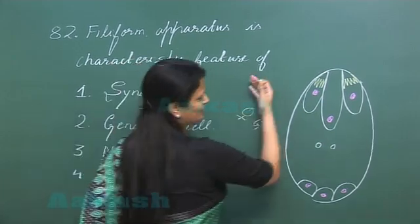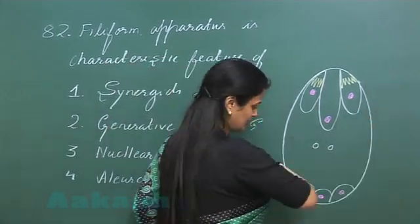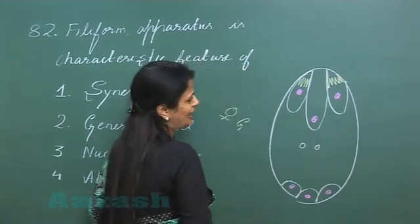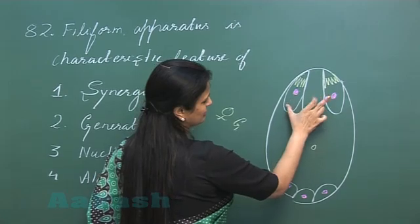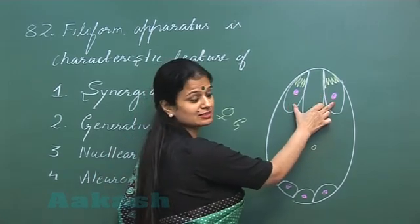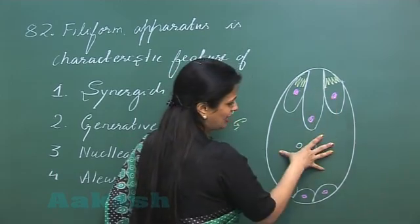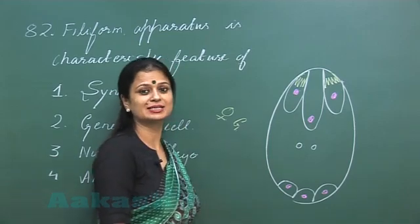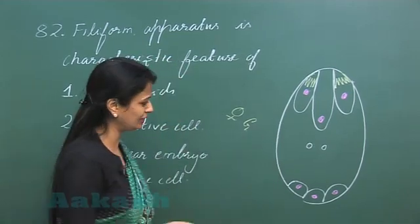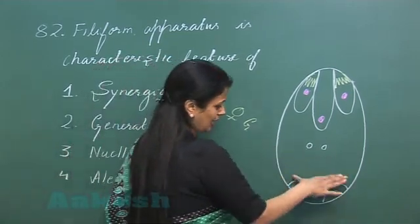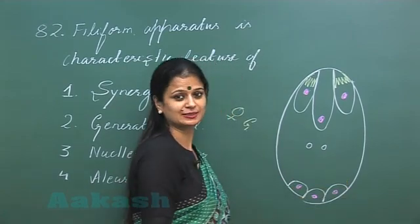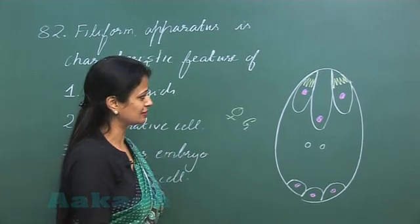Now this is micropylar end, this is chalazal end. At the micropylar end you can see these two cells, these are synergids, this is egg cell, this is the largest cell that is the central cell which has two nuclei you can see, and these three cells present here are antipodal cells.